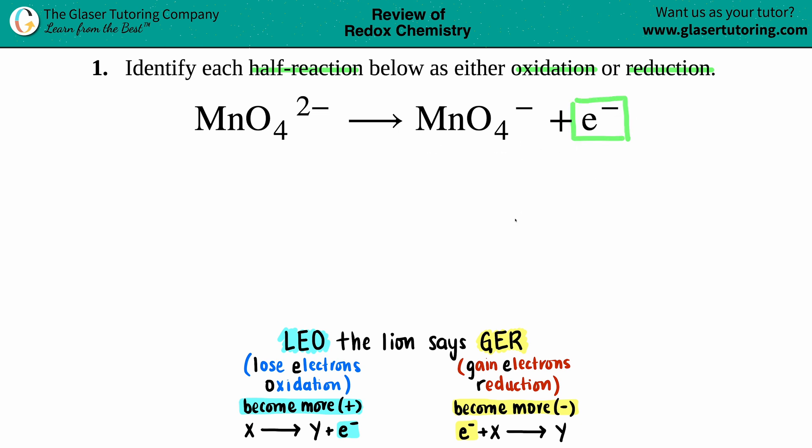So whenever you see electrons on the product side, right, in this example those e's are on the right side, that's always going to be oxidation. On the flip side, if you see your electrons on the left side of the equation, that's always reduction, that's a gain in electrons. So here, since our electrons are on the right side, the product side, this is going to be oxidation.